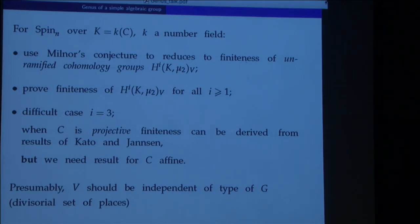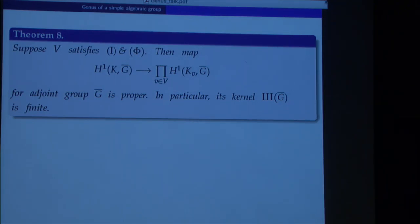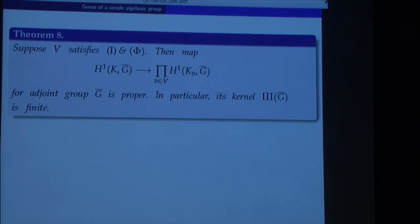For the field Q(x), we are talking about the set containing all valuations coming from the field of constants plus all irreducible polynomials — this set should work conjecturally in all situations. The benefits of having such a set V are not reduced just to having a finite genus. Another consequence is that if we look at the global-to-local map in Galois cohomology and we know our set V satisfies the finiteness condition, then this map will be proper — the preimage of any finite set will be finite. In particular, the kernel of this map, the Tate-Shafarevich set, would be finite. We know this is true for PSL over any finitely generated field, for SO over the function field of a certain curve, for type G2, and other situations.